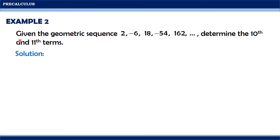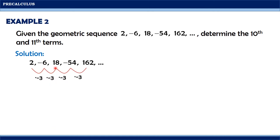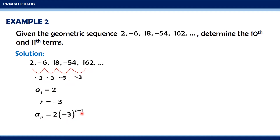For the next example, we have given the geometric sequence 2, negative 6, 18, negative 54, 162, and so on. We need to determine the 10th and the 11th terms. Notice that the pattern is multiplying by negative 3: 2 times negative 3 gives negative 6, negative 6 times negative 3 is positive 18, 18 times negative 3 is negative 54, and negative 54 times negative 3 is 162. So a sub 1 equals 2, the common ratio is negative 3, giving us the formula a sub n equals 2 times negative 3 raised to n minus 1.